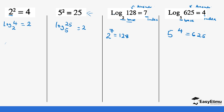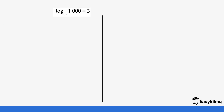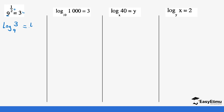Let's do a few more examples. Here this is the base, this is the index, and this is the answer. The log of three to the base of nine equals one half, since the answer is one half. Converting another example into index notation: the base is 10, the index is three, and this tells us that if you take 10 and power it three times you get 1000.